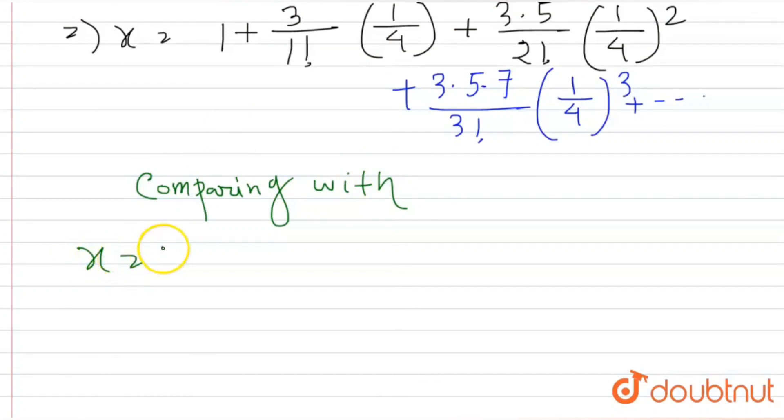Now comparing this with x is equal to 1 plus p into x by q whole to the power 1 plus p into p plus q by 2 factorial x by q whole square plus dot dot dot dot infinity. Now comparing these two series we will get